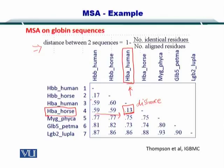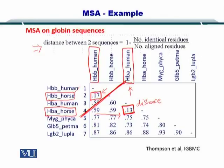Also, HBB horse is not very far from HBB human, as shown by a distance of 0.17. However, 0.13 is smaller, so HBA horse and HBA human are much more similar, while HBB horse and HBB human are a little less similar to each other. In this way, all of the distances listed in the distance matrix describe the difference between the corresponding sequences.